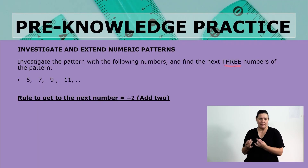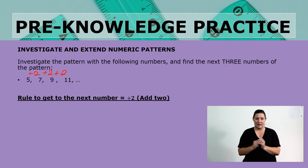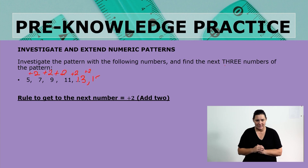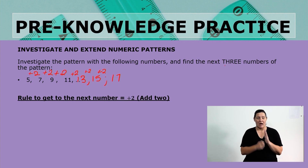Now that we know what is going on in this pattern, let us find the next three numbers. We have 5, add 2 gives 7, add 2 gives 9, add 2 gives 11. Adding 2 again gives us 13. Adding 2 again gives us 15. And adding 2 again gives us 17. So we have now written the next three terms of this number pattern.